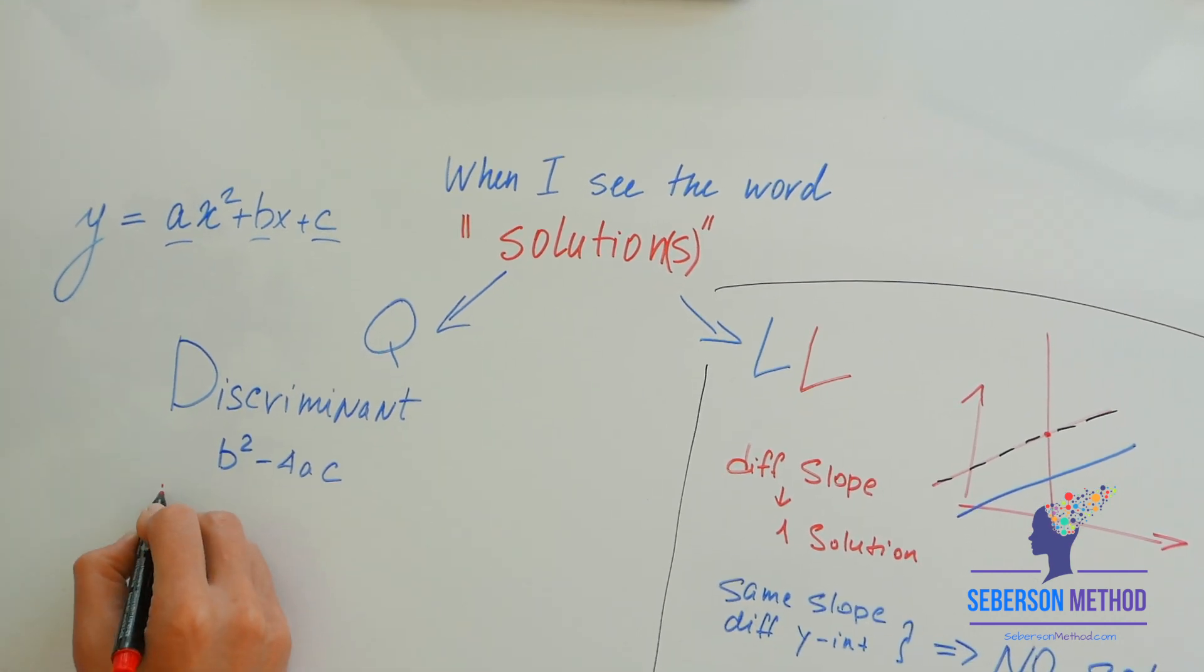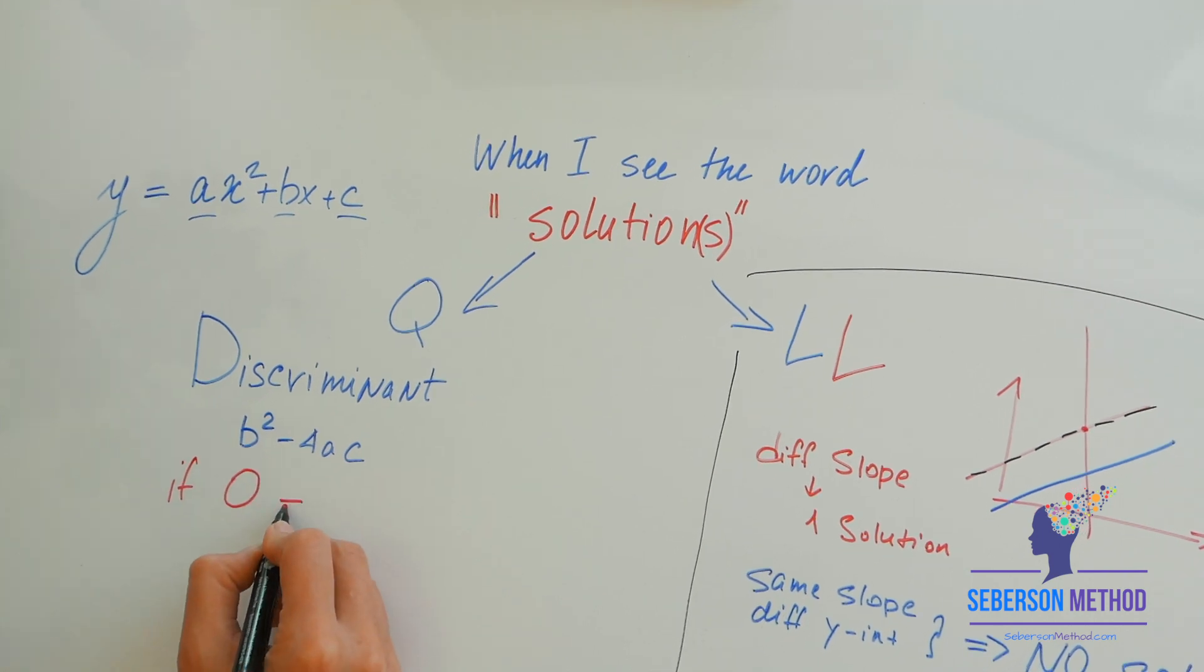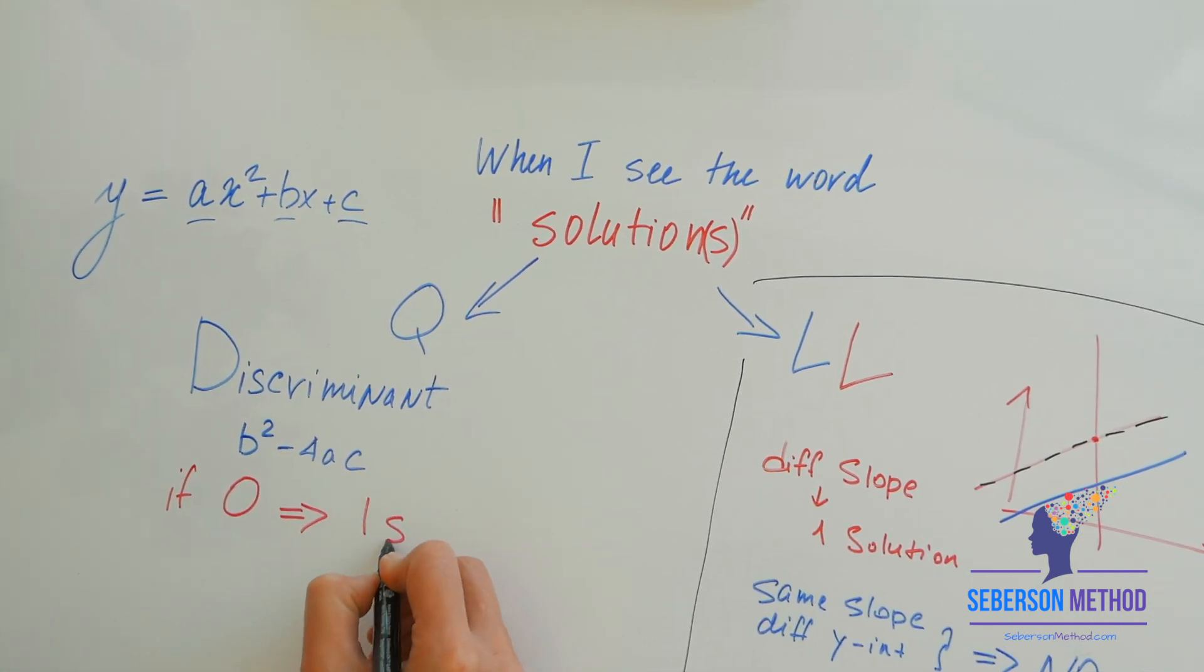If your discriminant is equal to zero, you're going to have one solution.